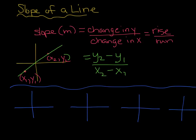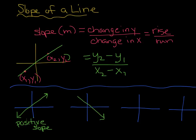A few important things to know before we do some examples: if your line goes up from left to right, we say that it has a positive slope. You'll see that if you find two points on the line and calculate the slope using the formula, the answer would always be positive. Similarly, if it goes down from left to right, we say it has a negative slope.